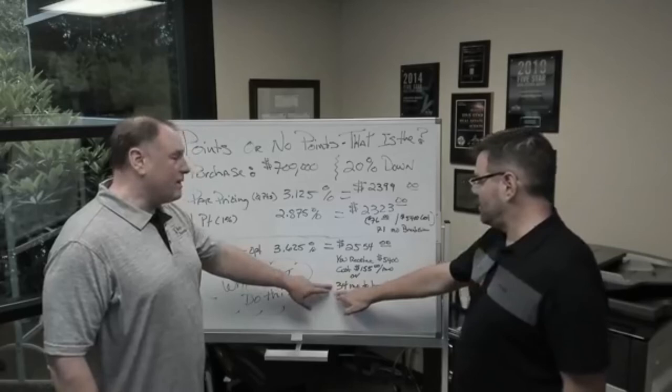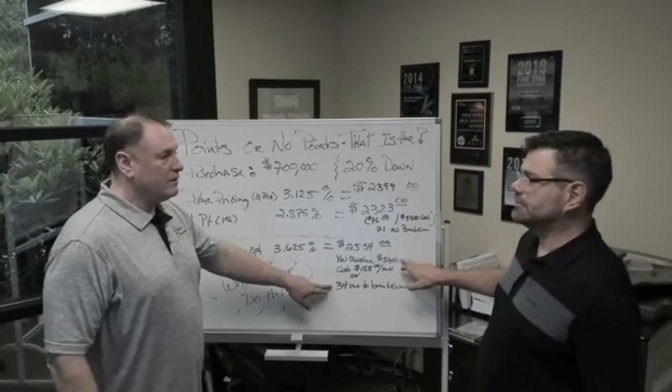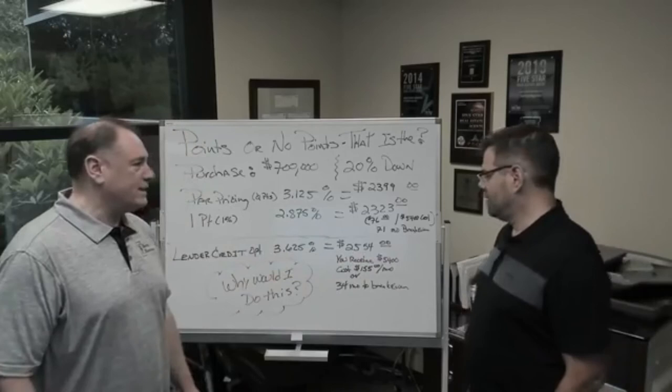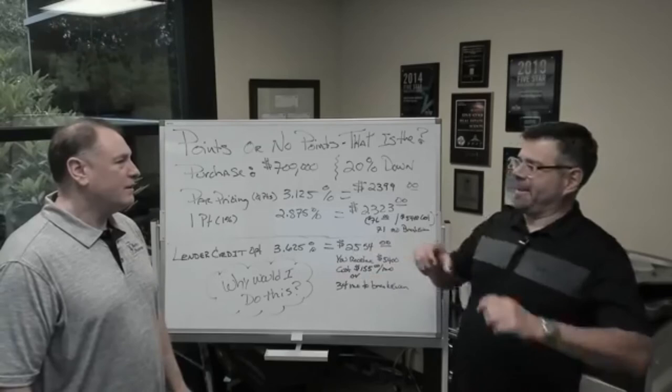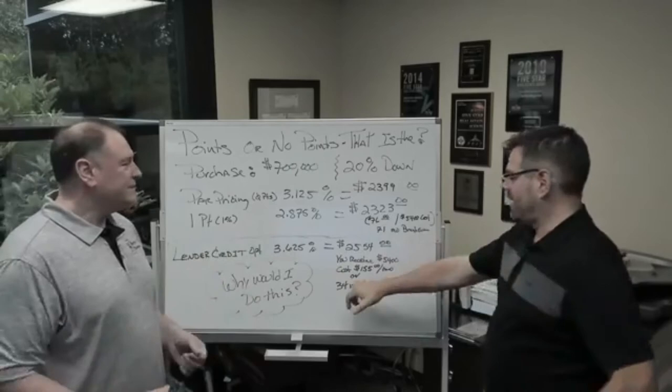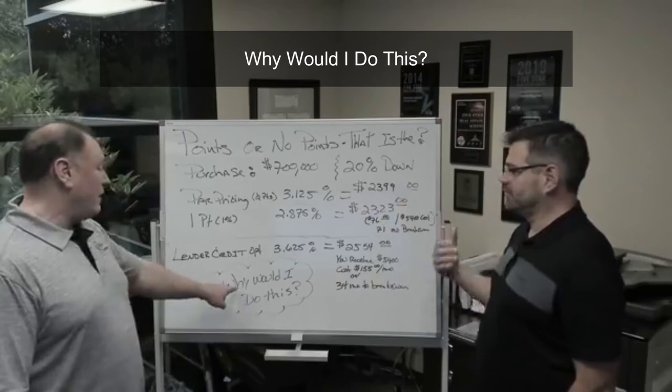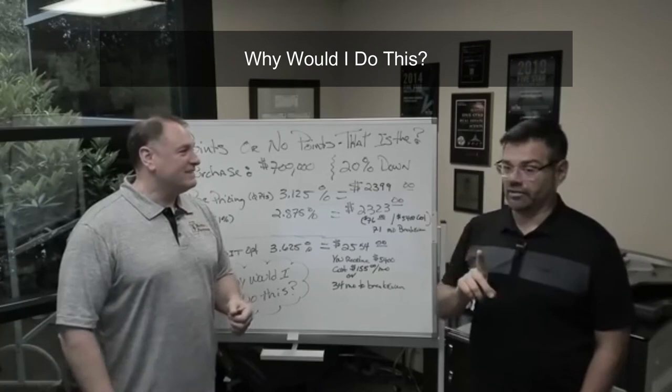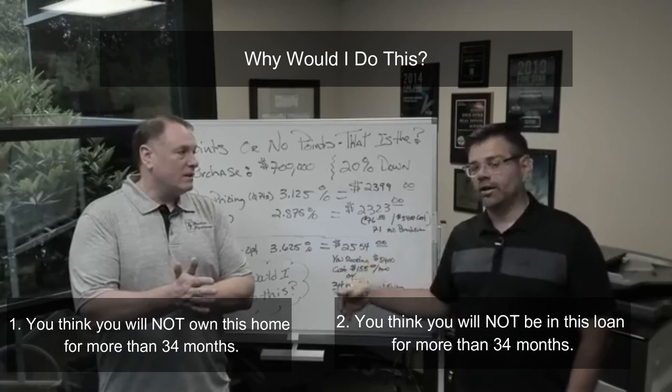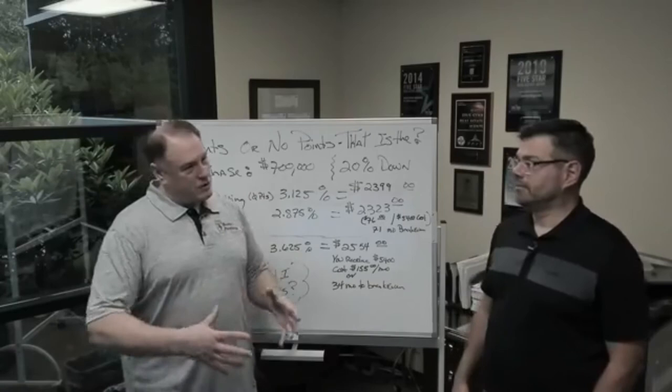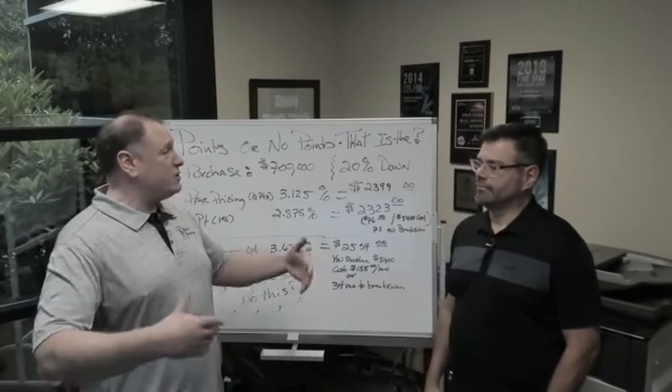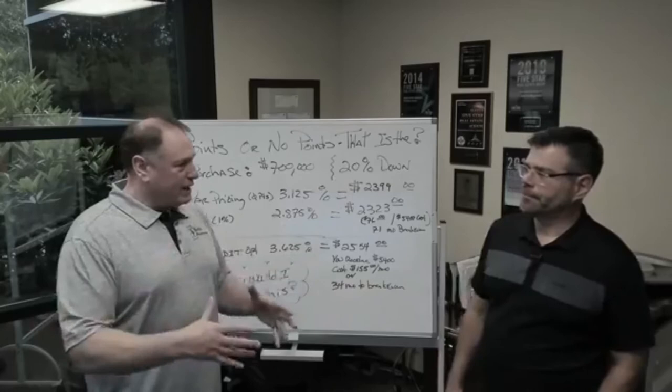Let's do the math. $2,554 is your payment with the rate of 3.625%. It's a half percent higher. That gives you a credit of $5,400. The payment is $155 per month higher. 34 months to break even. After 34 months, that wipes out the credit I gave you. If you were to take that $5,400 in a savings account that I gave you and pull out $155 a month, after 34 months that money would be gone. We would be net zero.